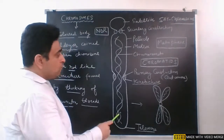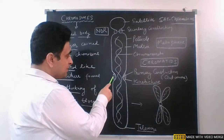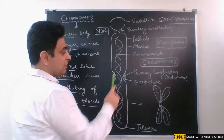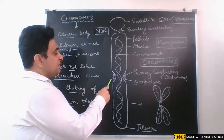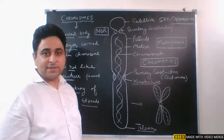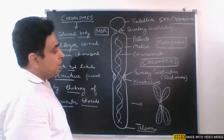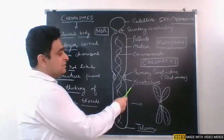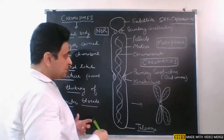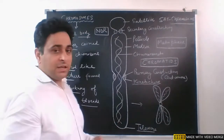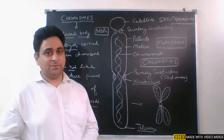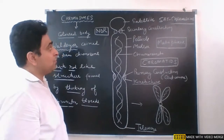One more thing to note: at the primary constriction there are disc-shaped structures called kinetochores. These are the structures to which spindle fibers attach at the time of cell division. So the function of the kinetochore is that spindle fibers get attached to it during cell division. This is all about the structure of the chromosome.